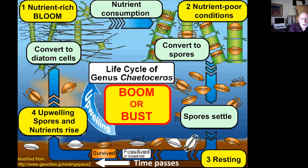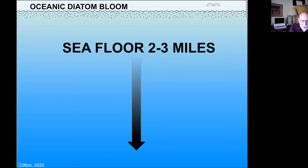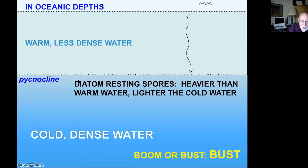This works fine in shallow water, but in the open ocean the seafloor is two to three miles below, and any resting spore that settles that far is never going to make it back to the sunlit sea. What diatoms do is take advantage of the pycnocline — a density boundary between the warm, low-density water near the surface and the cold, high-density water of the deep. The resting spores are heavier than the warm water but lighter than the cold water, so they accumulate along that boundary and wait until an upwelling event or turnover brings them back to the surface for a boom situation.